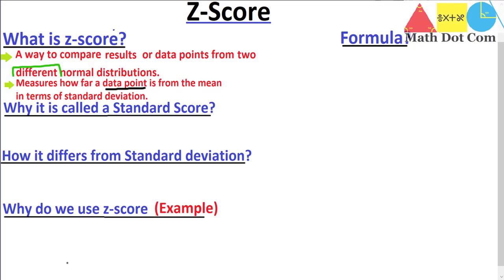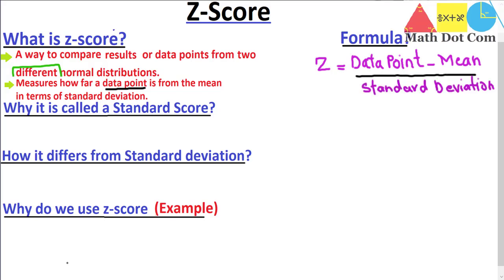The formula is: z equals the data point minus the mean, divided by the standard deviation. Using symbols: z = (x − μ) / σ, where x is the data point, μ (mu) is the mean, and σ (sigma) is the standard deviation. For calculating this you must have both the standard deviation and the mean of the given data so that you can compare scores from two different distributions.